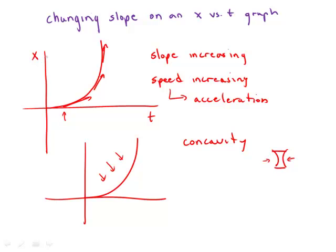And of course, this side of the graph faces up. So we could call this a concave up graph. And that also is another way to describe acceleration. That's another way to describe the condition of the slope increasing or the speed increasing. So acceleration is represented by a curved line, a line that is concave up on a position versus time graph.